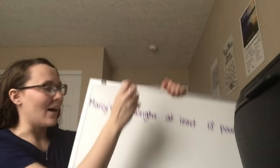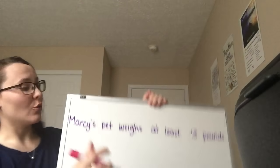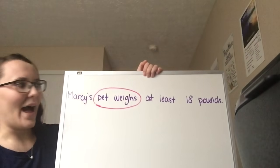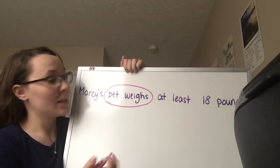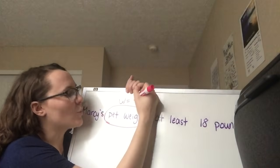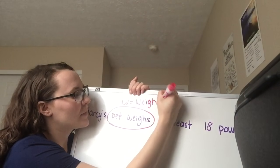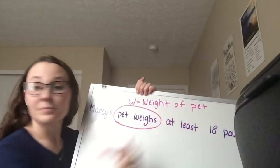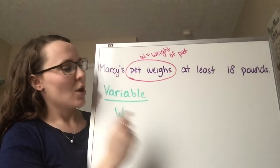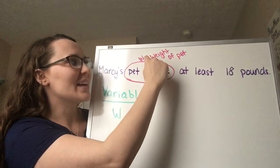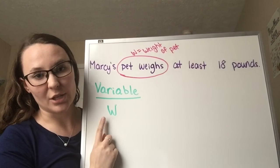So what don't we know here? We don't know the weight of the pet. So I'm going to circle that and we're going to call that our variable — that is what we don't know. I'm going to call that w, saying that w is the weight of the pet. So under where it says variable on your notes, you're going to put a w because what we don't know is the pet's weight, and we defined that as w. Always define your variable — don't just write w, say w equals weight of pet.